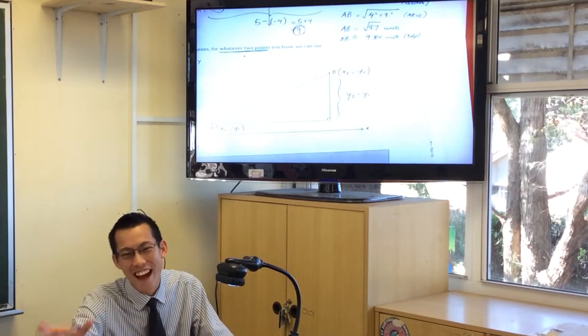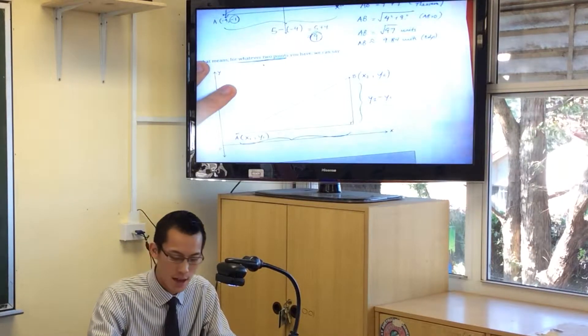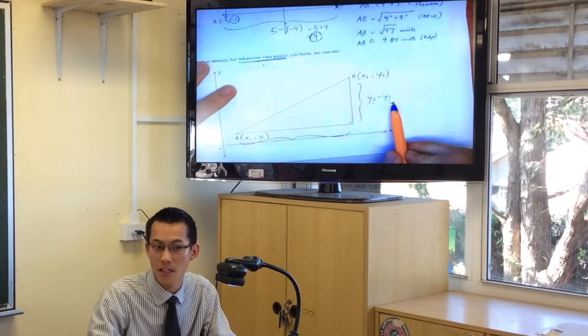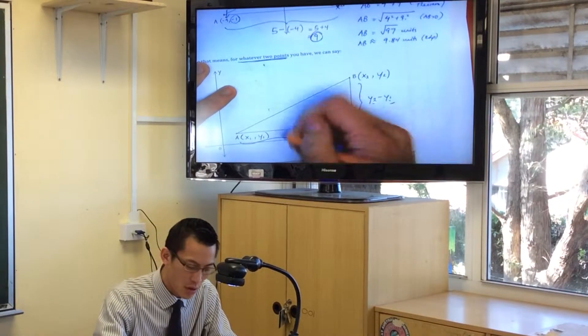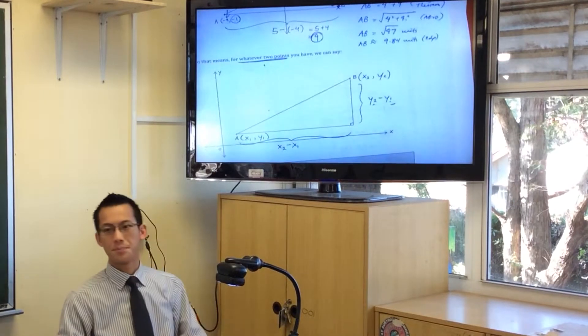Okay, now, in the same way, for the run for this horizontal distance, instead of the y coordinates, I'm going to subtract the x coordinates, good. It'll be x2 minus x1, okay?